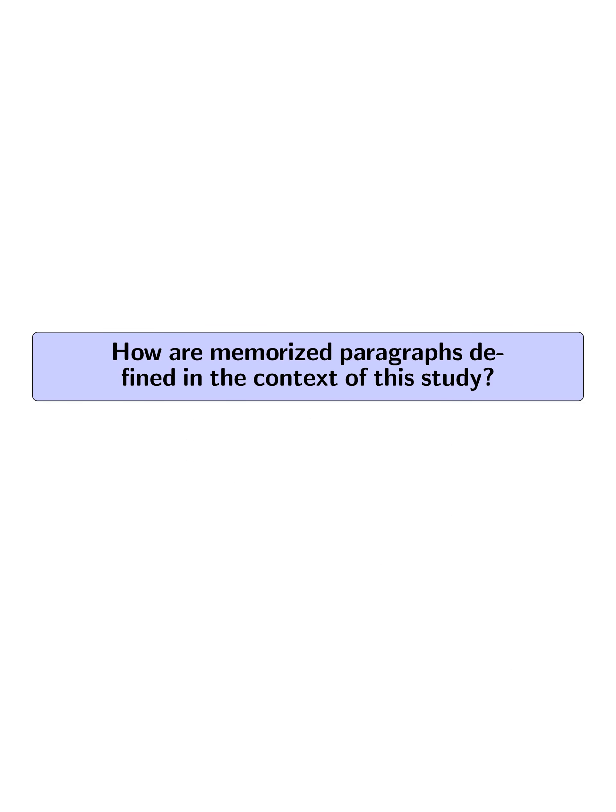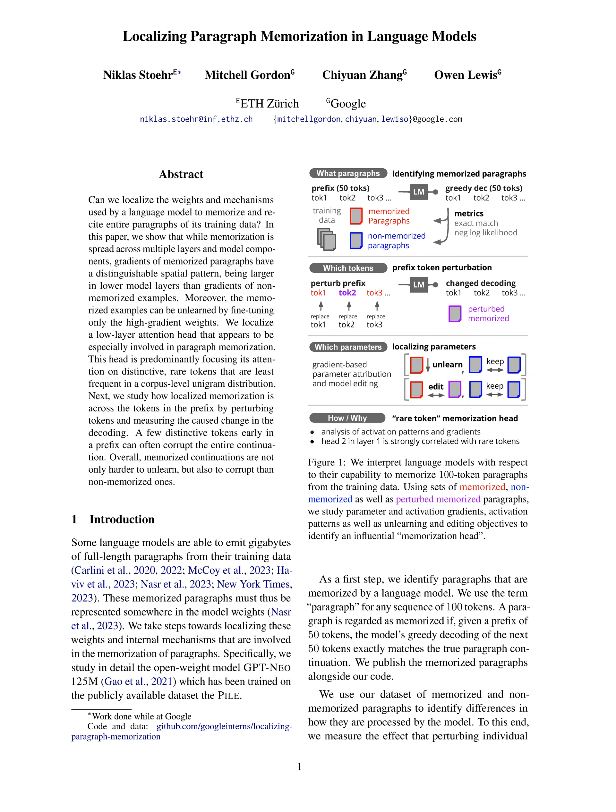How are memorized paragraphs defined in the context of the study? Memorized paragraphs in this study are defined as any sequence of 100 tokens. A paragraph is considered memorized if, given a prefix of 50 tokens, the model's greedy decoding of the next 50 tokens exactly matches the true paragraph continuation. This definition is used to identify paragraphs that have been memorized by the language model.